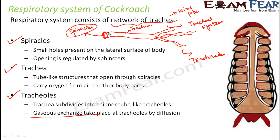The spiracles are small holes, and the opening and closing of these holes are regulated by a muscular sphincter. When it closes, no air comes in; when it opens, air comes in. This is how the process of respiration takes place in the cockroach and other insects.